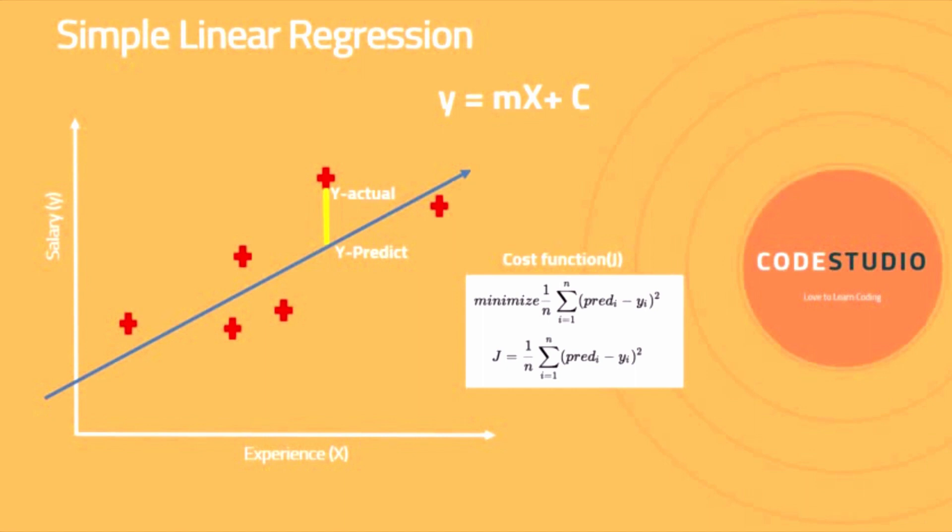The model will try to find the minimum cost function for these lines. The line with the minimum cost function will be your best fit line.